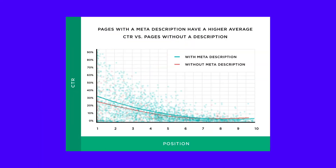Meta descriptions actually don't have a direct effect on your SEO ranking, yet Google still advises creating unique ones for each page of your site. It's the keywords found naturally in your content that are important for SEO. What meta descriptions do impact is click-through rate — how many people decide to click on your site. Think about the last time you Googled something. What made you pick a certain link? It was probably the title, the description, or both that convinced you.